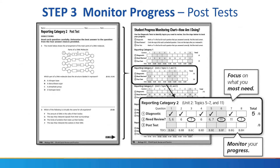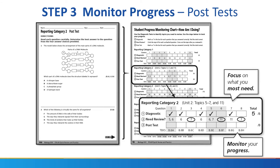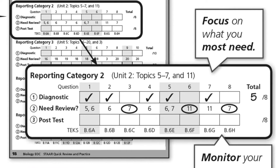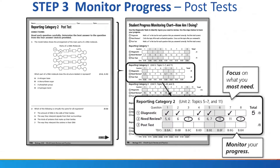Step 2 is intervention using targeted topic instruction and STAR practice. Step 3 is monitor progress using the five post-tests. Each diagnostic and post-test assesses the same TEKS in the same sequence, and each item corresponds to a topic. The student progress monitoring chart can be used to create individualized learning plans. When preparation time is limited, such as for retests, this three-step approach is an effective way to prioritize and individualize remediation.